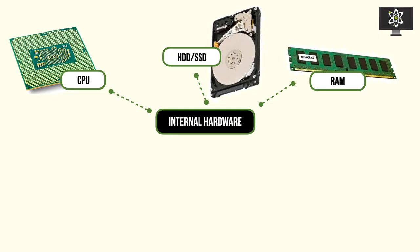The CPU requires instructions to execute, and it gets them from a memory location. Data access from internal storage into the CPU is not quick enough for modern use, so we need a quick-access memory location — that's where random access memory, RAM, comes in. RAM is used for caching, and most modern applications, especially games, are very dependent on RAM.